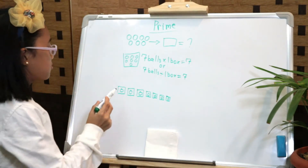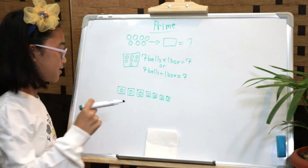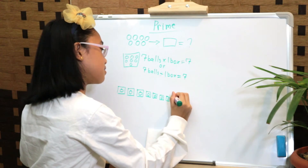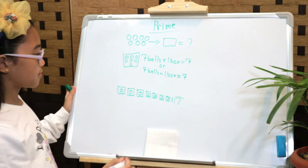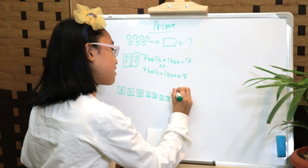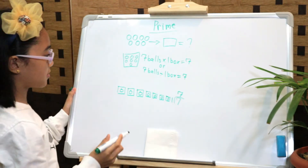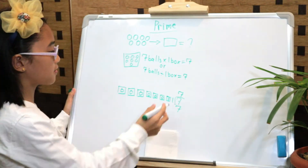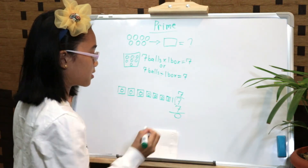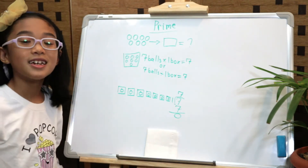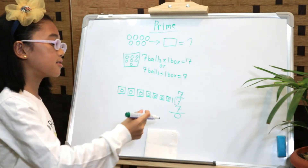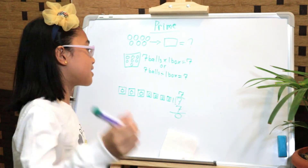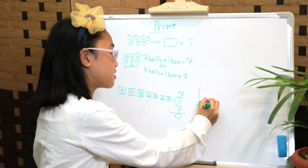Okay, so seven balls and seven boxes. Now let's divide: seven divided by one. How many ones in seven? Seven. Seven times one is seven, minus seven equals zero. So one is a factor of seven with no remainder.